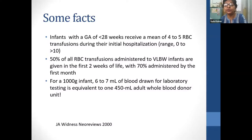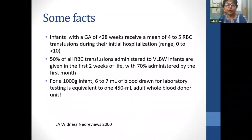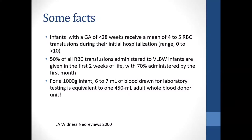Fifty percent of all RBC transfusions administered to very low birth weight babies are given in the first two weeks of life — that is the time when they are very ill and many investigations have to be done — with 70 percent administered by the first month for a 1,000-gram infant. Six to seven ml of blood drawn for laboratory testing is equivalent to one 450 ml adult blood donor unit. We often don't remember this.